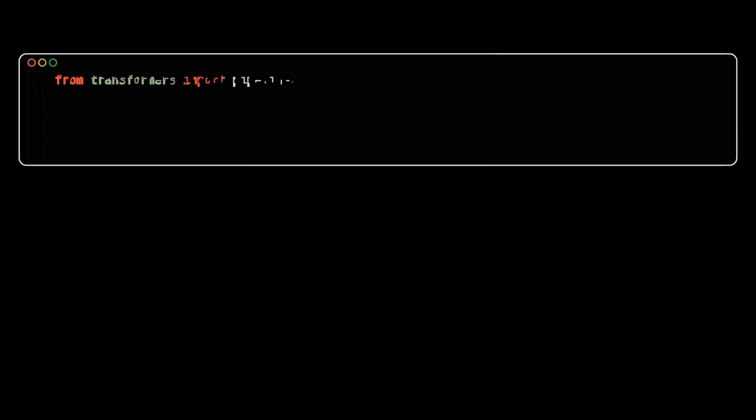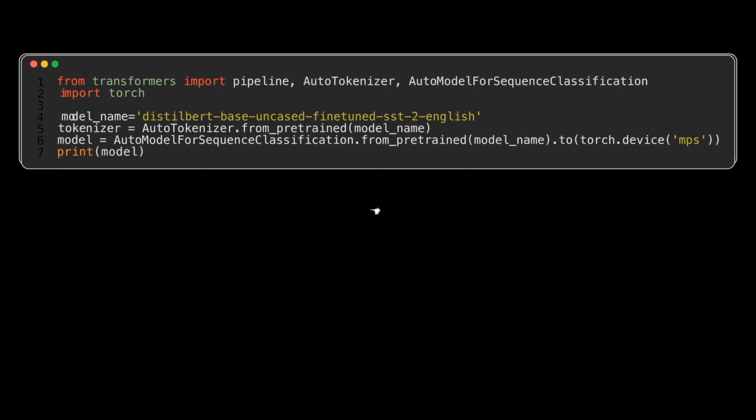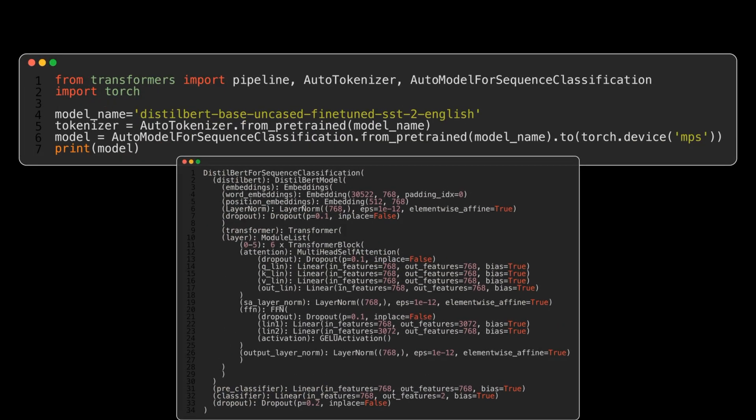Now we can get a description of all the layers in the network by running the simple code on your screen. If we use the command print brackets model, we get a rich text description of all the model parameters. Here we can see that the vocabulary for this model is made up of just over 30,000 tokens with an embedding vector size of 768 elements.